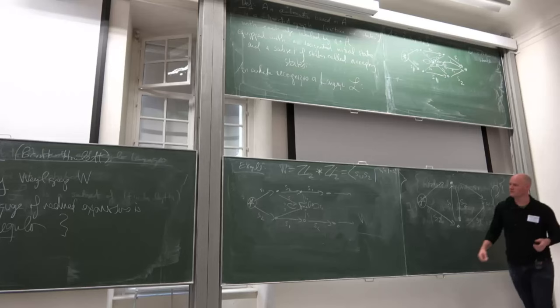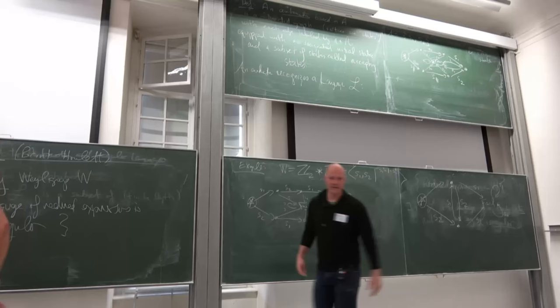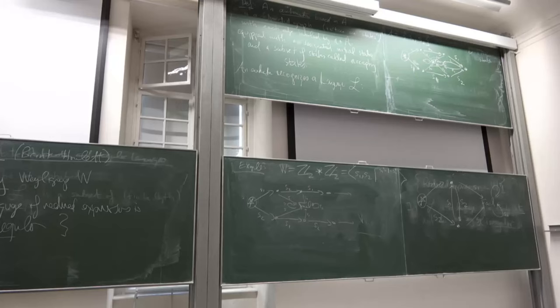Not all presentations of groups have a regular language of reduced expressions — there are definitely examples which aren't. This is just a class of groups that one might be interested in from a complexity theory point of view, and it includes all Coxeter groups. The proof uses the representation theory we talked about — this representation on V*.